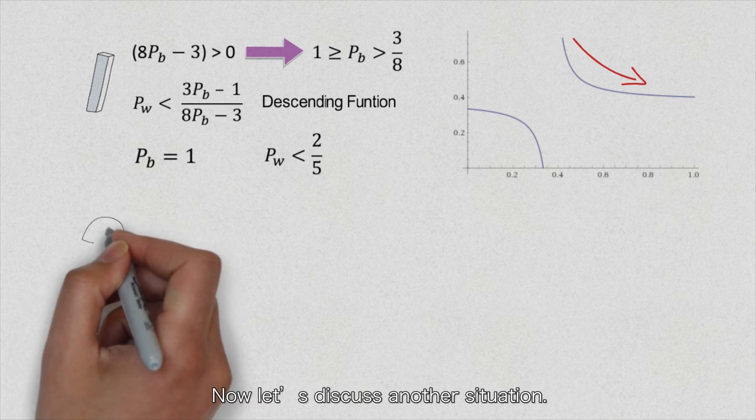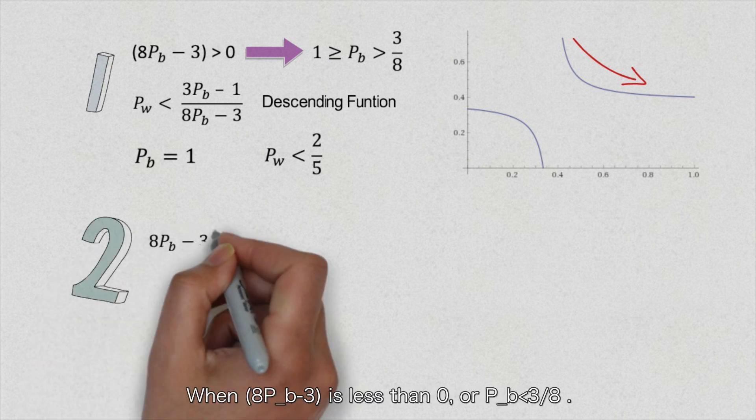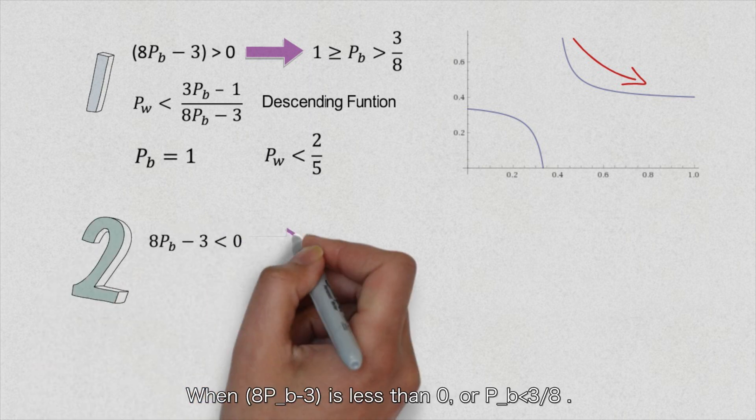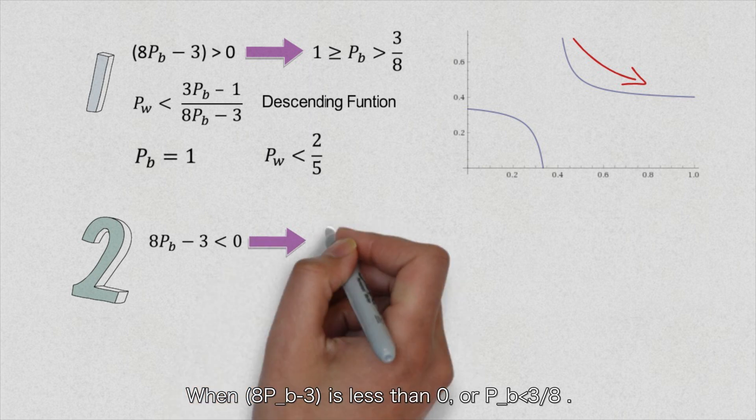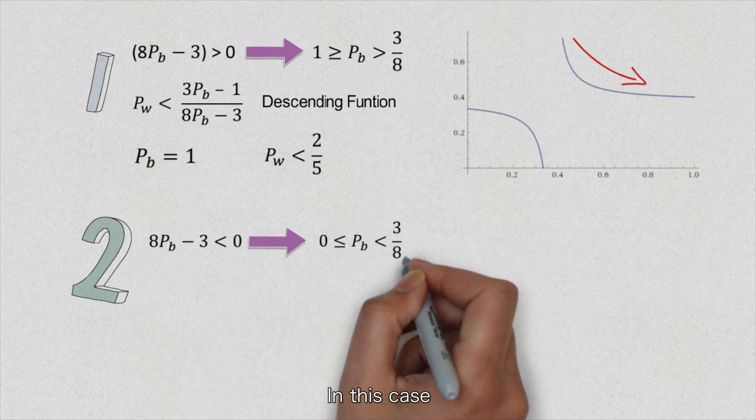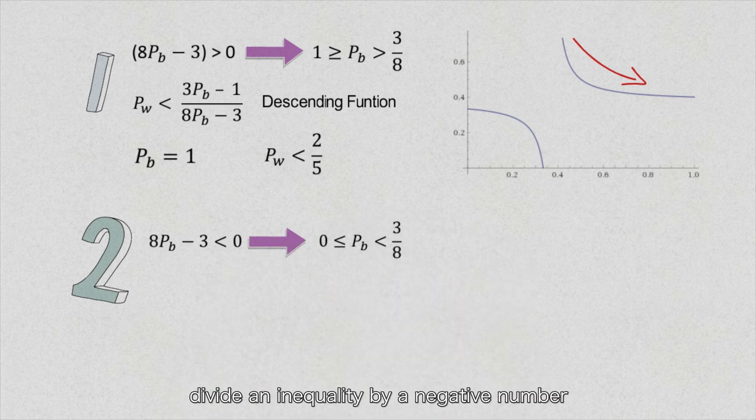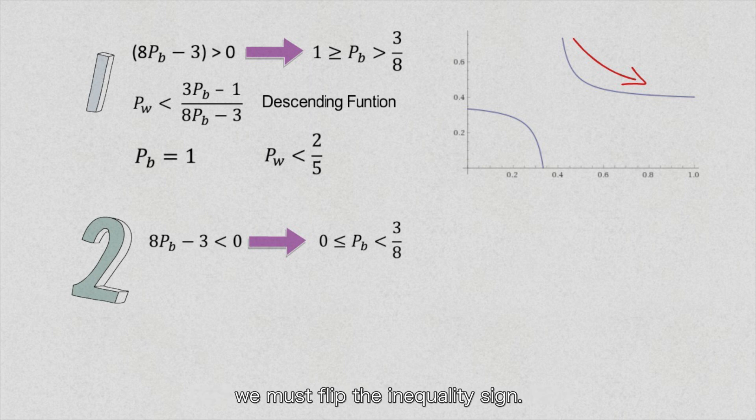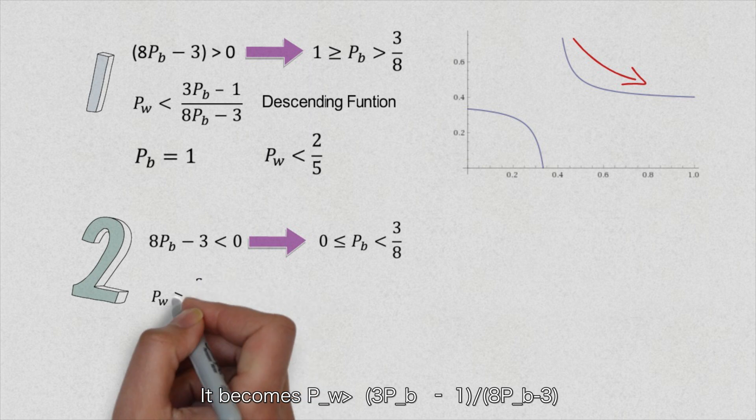Now let's discuss another situation. When 8P_b minus 3 is less than 0, or P_b is less than 3 over 8. In this case, when dividing an inequality by a negative number, we must flip the inequality sign. It becomes that P_w is larger than 3P_b minus 1 over 8P_b minus 3.